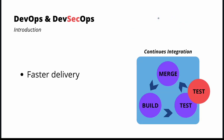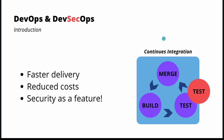What shift left actually means is that it gives us faster delivery, because if we discover a security issue far away from development, it will require a lot of effort to mitigate those issues. It also naturally reduces costs of development and provides security as a feature.